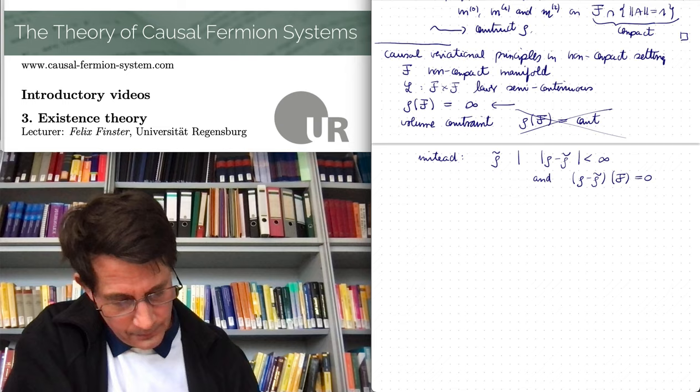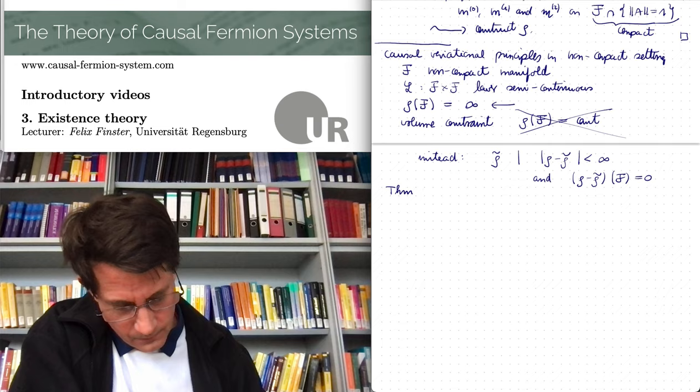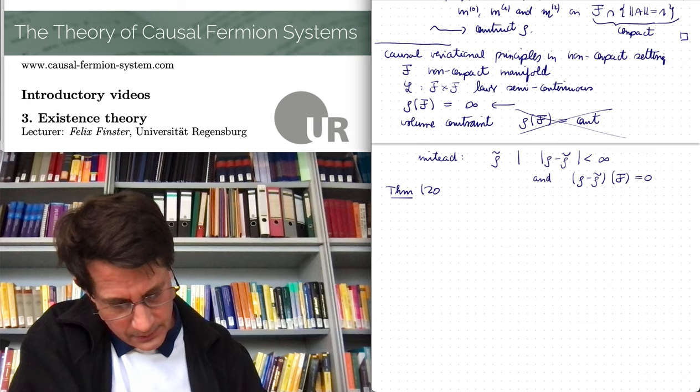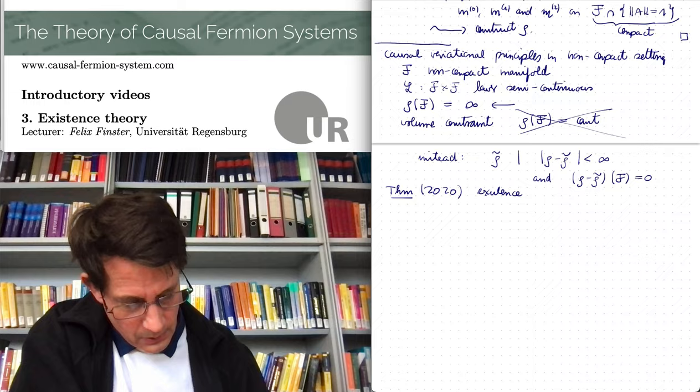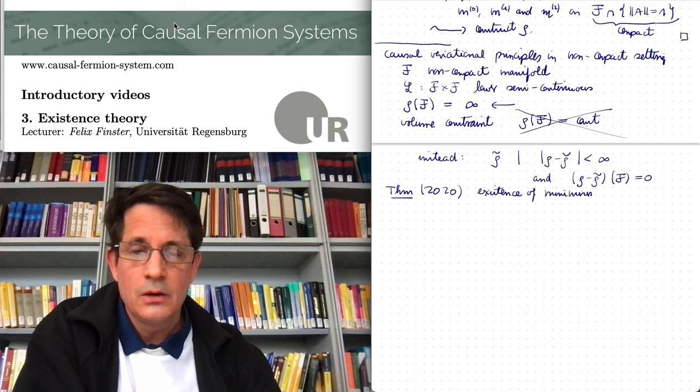And then one can also prove an existence result. So this is together with Christoph Langer. And in fact like from 2020, so it's fairly recent, existence of minimizers under certain technical assumptions, which I won't explain in detail here.